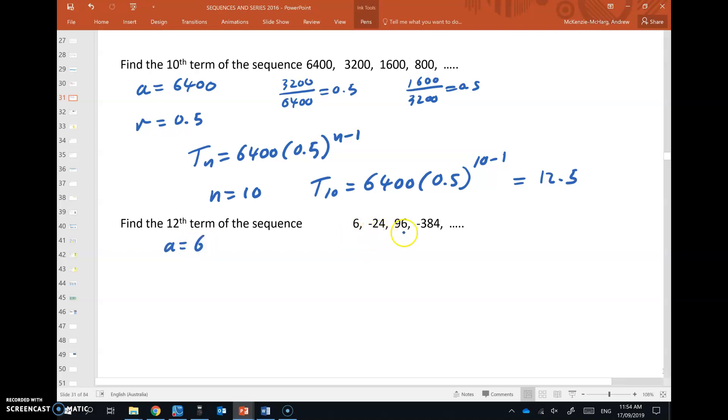Now you see this alternating negative. Well, what does that indicate? Okay, let's have a look. Negative 24 over 6 is negative 4. And 96 over negative 24 is also negative 4. So when you multiply by a negative common ratio, you get this alternating sequence,